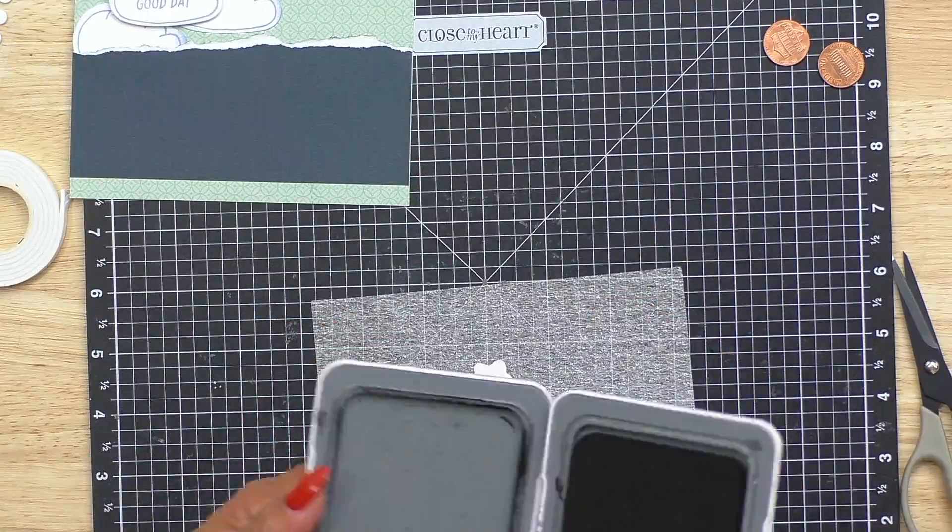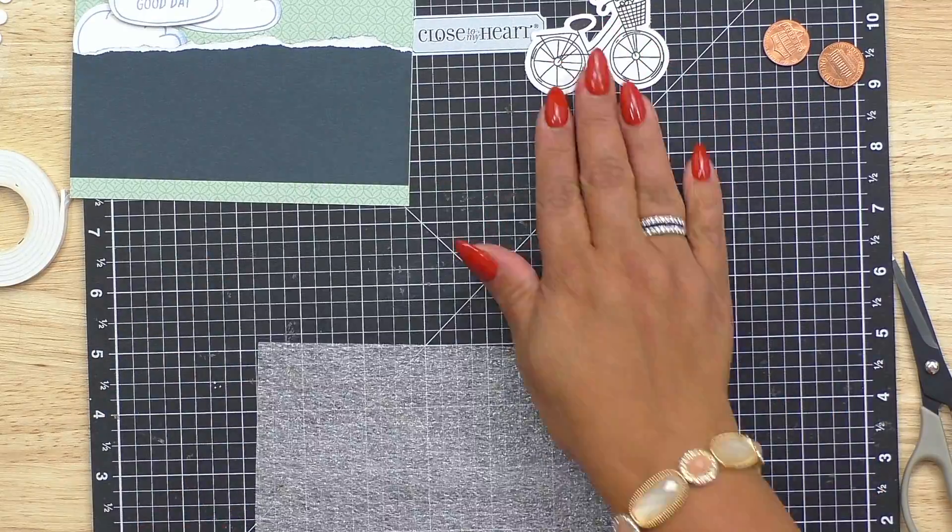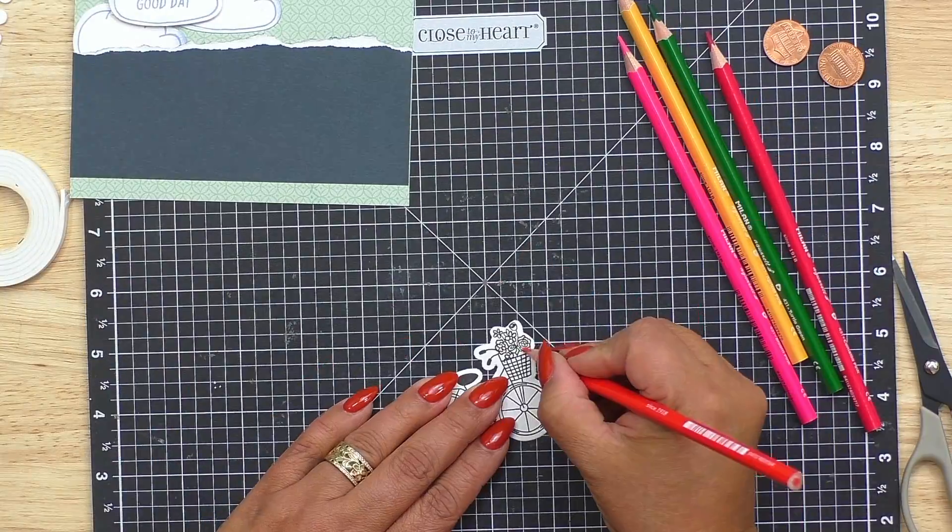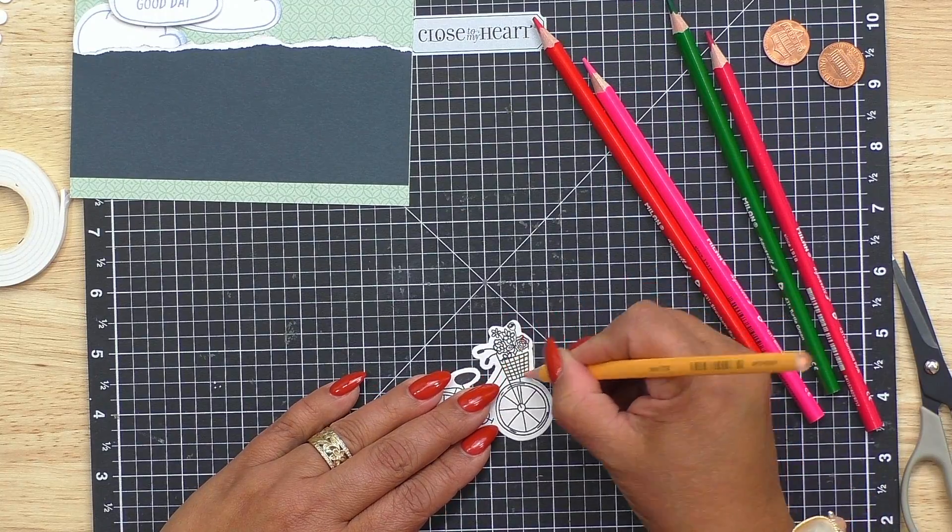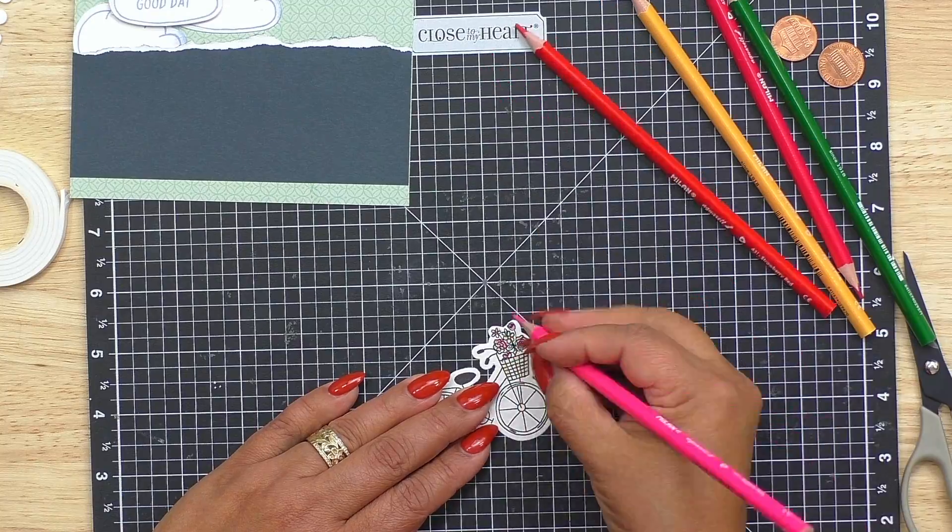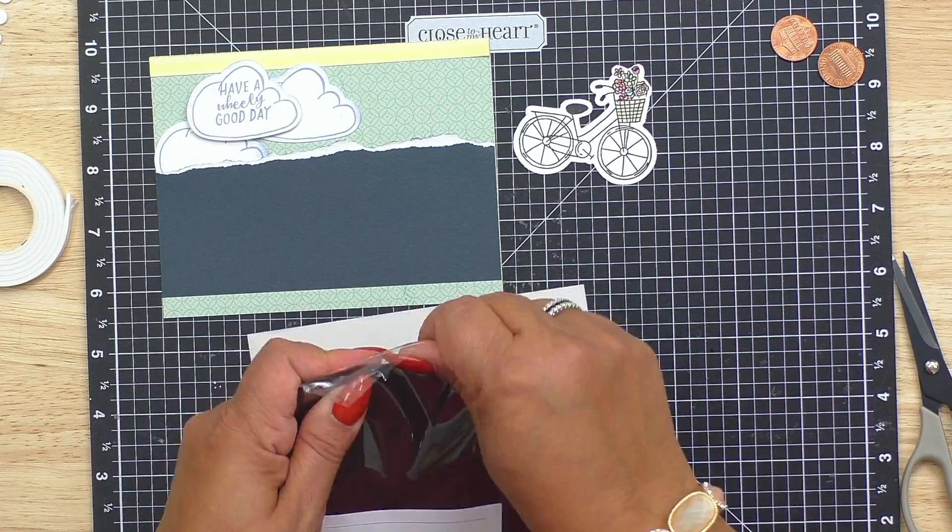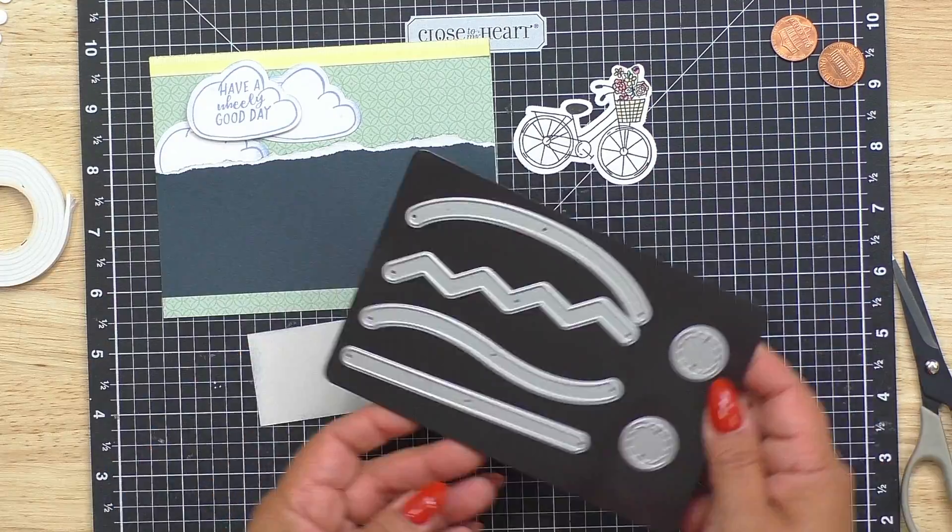Now let's get our bike ready. We're going to add the flowers in the basket. So simple and so cute. You have options. Let's go ahead and color those in. I'm just using our watercolor pencils dry. So simple and easy and fast. Gives it just a little pop. Now let's go ahead and start building.